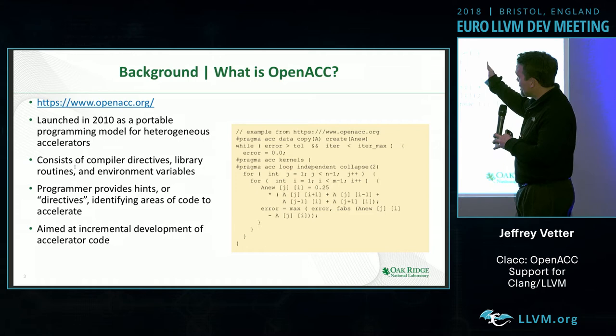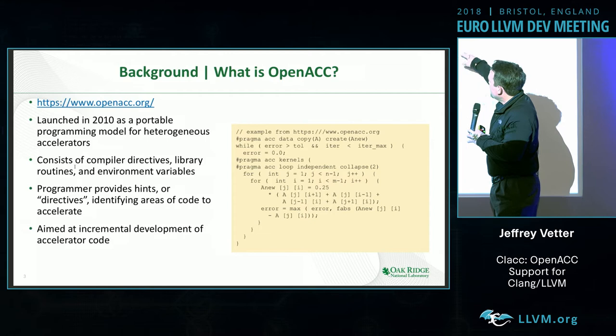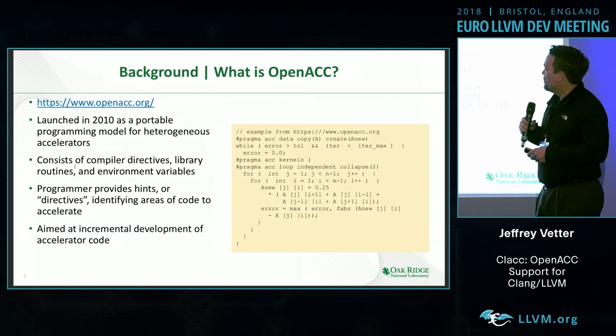Just if you haven't seen OpenACC, I put this up here so you can find some more information on it. It looks like OpenMP, but it's really meant for heterogeneous offload. It has pragmas that identify different types of loop optimizations and directives that you can use to offload to a GPU or even something like an FPGA.